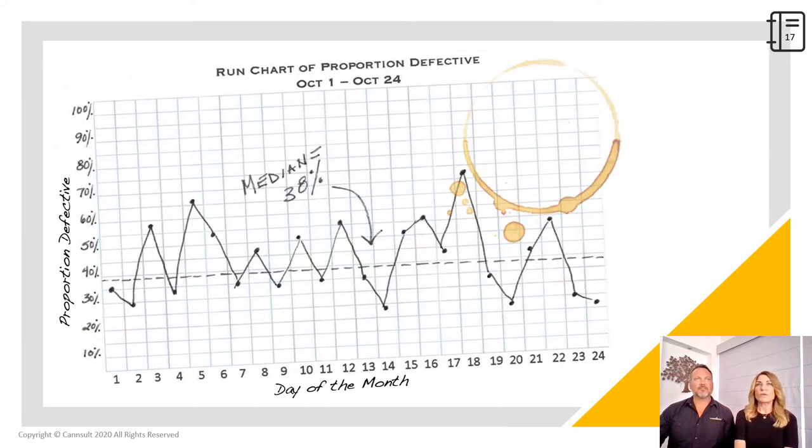And another run chart with the same data set, but this one is focused on quality instead of productivity. And it's measuring the proportion defective. On the y-axis, we have the proportion. And again, on the x-axis is the measure of time, which in this case is day of the month. Because it's a run chart, we've included a median line at 38%.